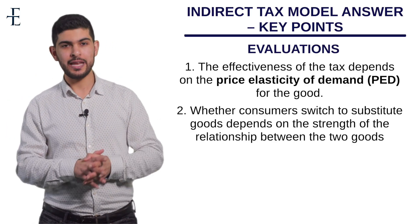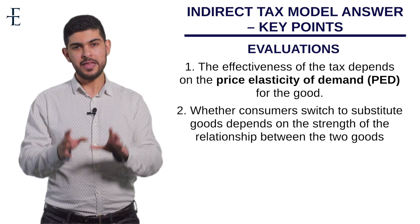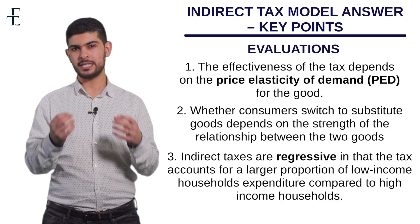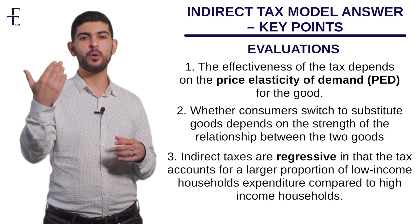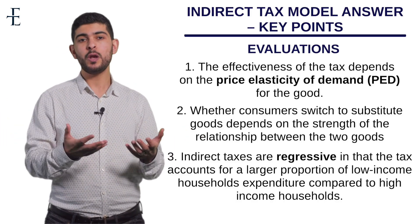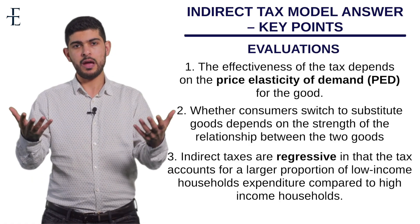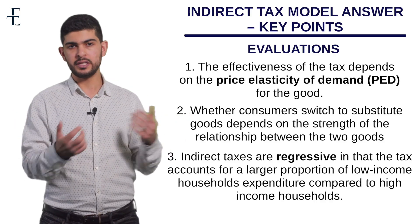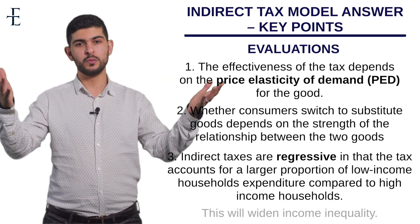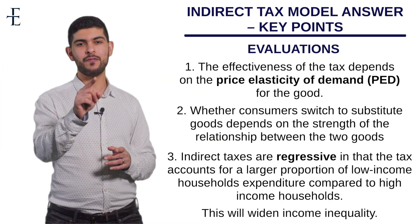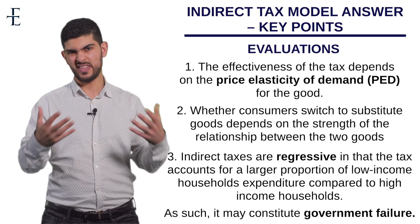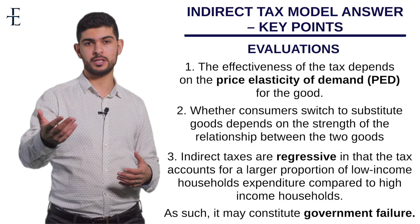Evaluation three: any indirect tax like this is regressive in nature, meaning it disproportionately affects low-income households more than high-income ones. For a low-income household, the tax represents a greater proportion of their spending, so it hits them harder than someone with lots of money. This worsens income inequality and is therefore an example of government failure — where the government steps in to correct the market failure of obesity but ends up making another problem worse.